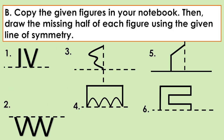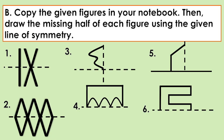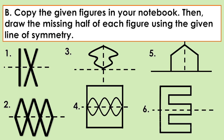Letter B: Copy the given figures in your notebook, then draw the missing half of each figure using the given line of symmetry. We have number one, number two, number three, four, five, and six.